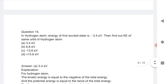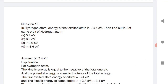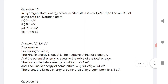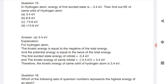Question 14 (similar to the ionization enthalpy question): In the hydrogen atom, the energy of the first excited state is −3.5 eV. Find the kinetic energy of the same orbit. For a hydrogen atom, kinetic energy equals the negative of total energy, and potential energy equals twice the total energy. Since the first excited state energy is −3.5 eV, kinetic energy becomes +3.4 eV.